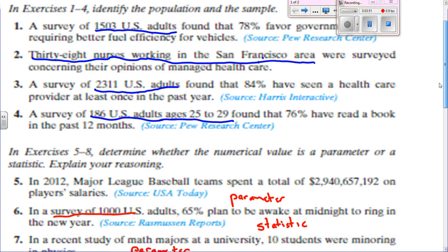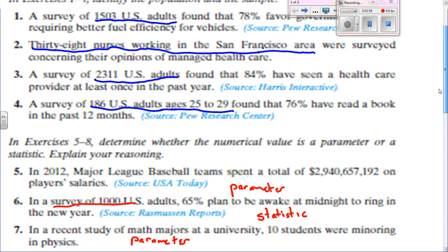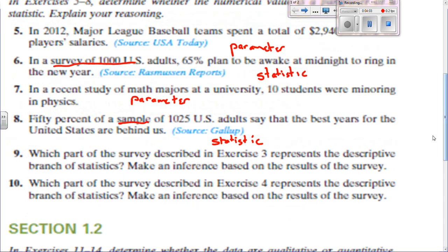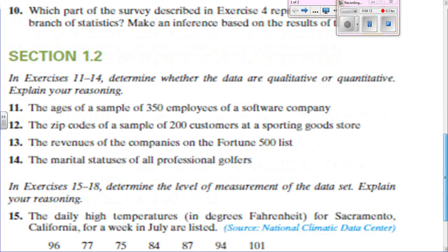Tell whether it's qualitative or quantitative data. The ages of a sample of 350 employees of a software company would be quantitative — that's giving us the ages of those employees. The zip codes of a sample of 200 customers would be qualitative. Even though zip codes are numbers, the numbers don't stand for anything — you can't subtract Aliquippa's zip code, 15009, from 15010 in any meaningful way.